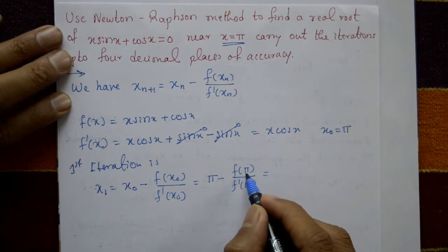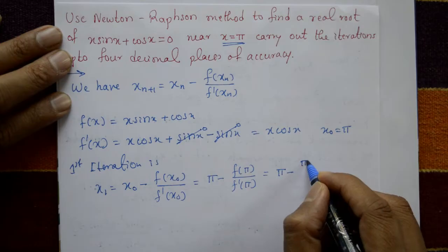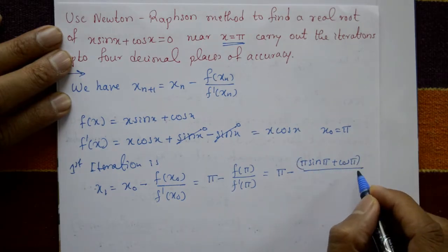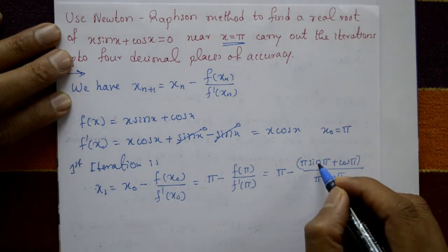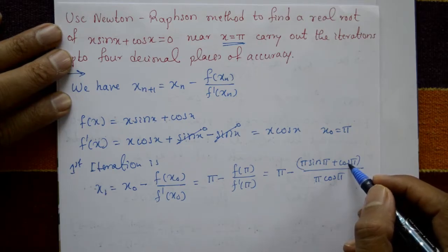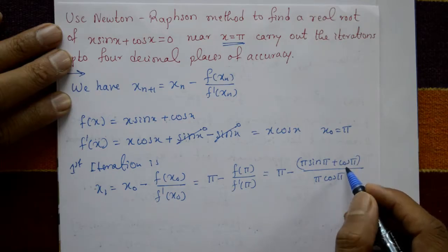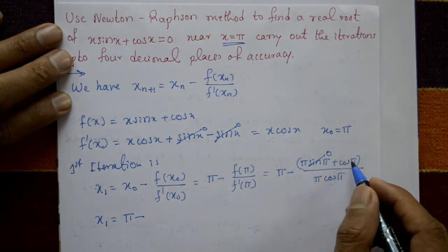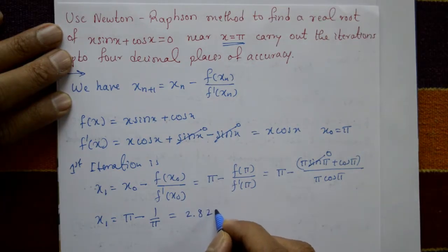Now f(π) = π·sin(π) + cos(π), and f'(π) = π·cos(π). Since sin(180°) = 0 and cos(180°) = −1, we get f(π) = 0 + (−1) = −1 and f'(π) = π·(−1) = −π. So x₁ = π − (−1)/(−π) = π − 1/π = 2.8233.